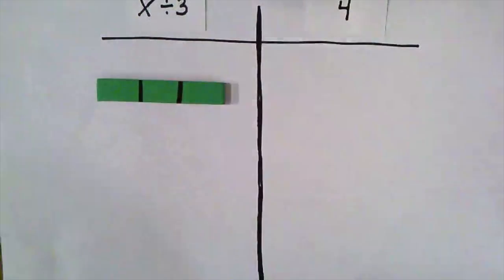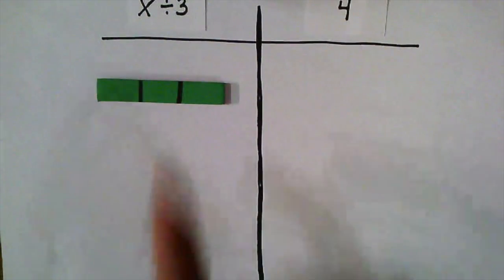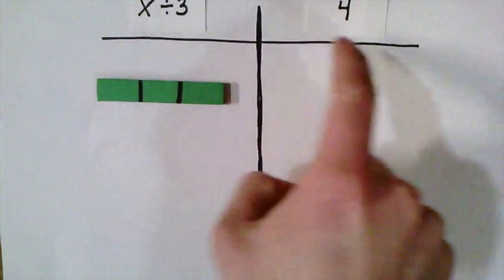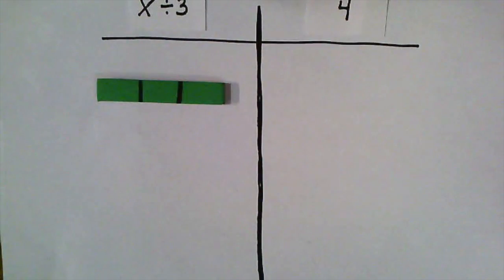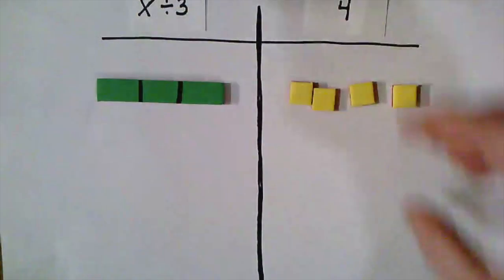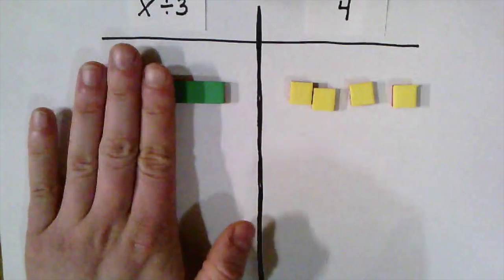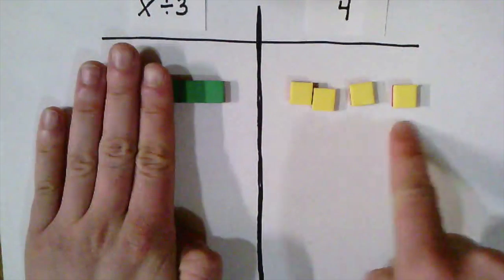So really, we need to visualize it more like this one here. And when we have x divided by 3 equals 4, it means that 1 third of this tile is actually going to be equal to the 4 that's on the other side. So we might actually just be thinking about 1 third of x is equal to 4.